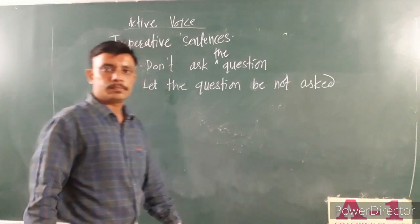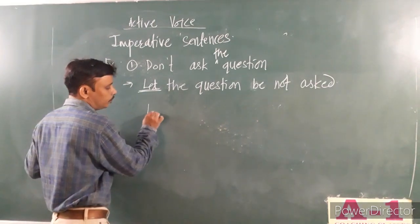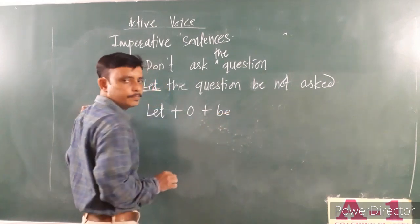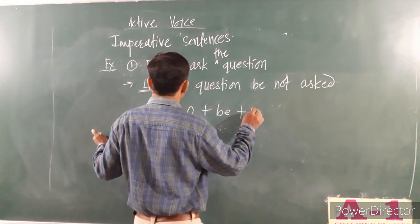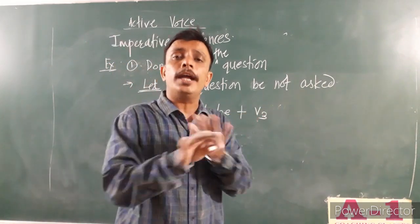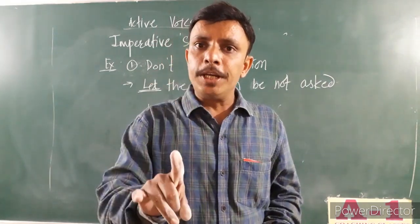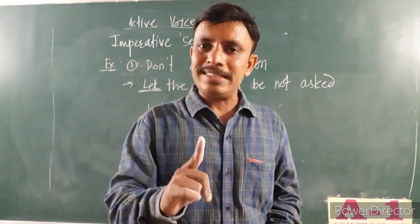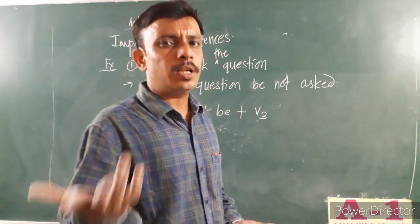Let's see: Don't ask question. Let the question be not asked. Here, let the question be not asked. We got the pattern: Let plus object plus be plus V3 plus not. At the end, it is not necessary to write by and whatever the subject, because remember, in imperative sentences, subject is always second person 'you'.